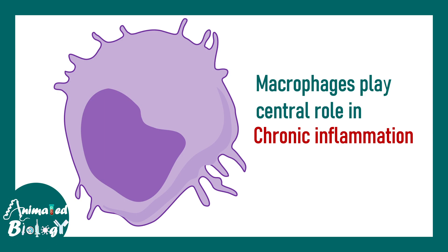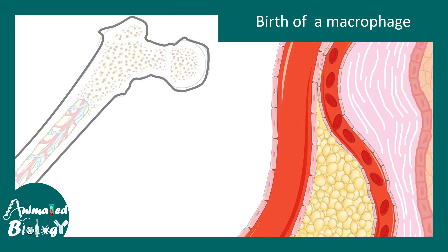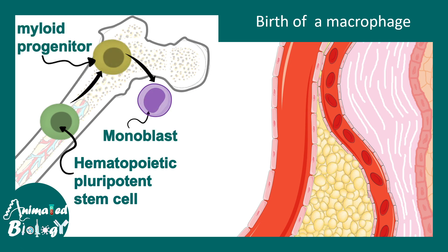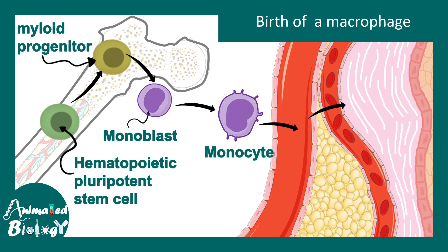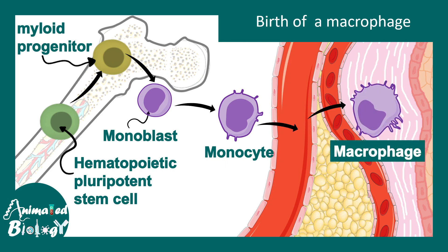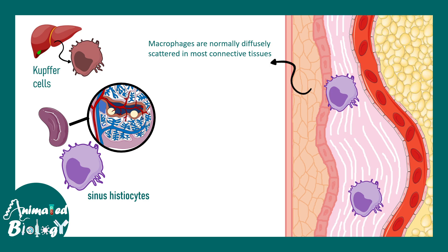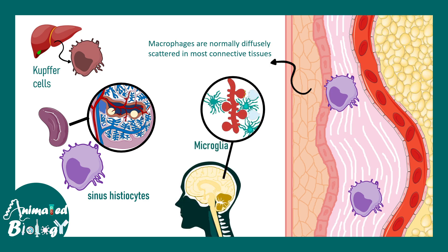What role do macrophages play in developing chronic inflammation? We'll begin with their birth. A hematopoietic pluripotent stem cell gives rise to myeloid progenitors, which eventually form monoblasts. Monoblasts get differentiated into monocytes. When monocytes enter the tissue space they become macrophages, and these macrophages are normally diffusely scattered in different connective tissues and organs. In the liver they are known as Kupffer cells, in the spleen as sinus histiocytes, and in the brain as microglia — each has a role in inflammation.